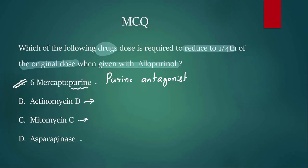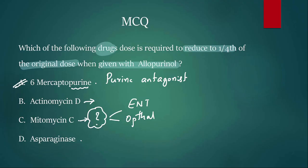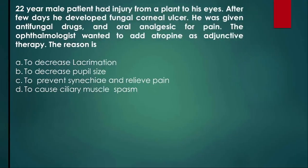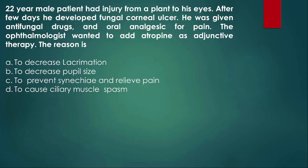Actinomycin D and Mitomycin C are also anti-cancer drugs. Mitomycin C is used in ENT practice and ophthalmology topically. L-Asparaginase is an enzyme used as an anti-cancer drug. Moving to MCQ 4: a 22-year-old male had an eye injury from a plant and developed a fungal corneal ulcer.